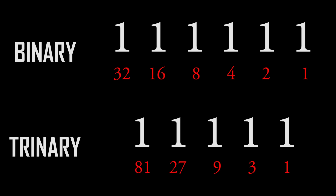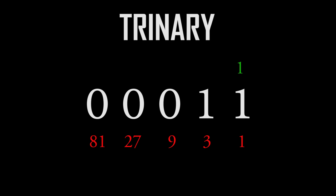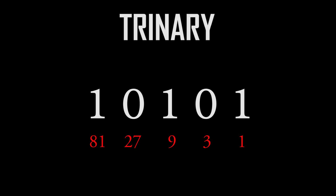If it's a zero, you add up zero. If it's a one, you add up the value of that digit, like three, twenty-seven, or eighty-one — just like binary. So in trinary, what's zero zero zero one one? The first digit's value is one and the second digit's value is three, with zeros on the zeros, so you add up to four. How about one zero one zero one? A one in the ones place is one, plus a one in the nines place is nine, and one in the eighty-ones place is 81, with zeros on the others — so it adds up to ninety-one.